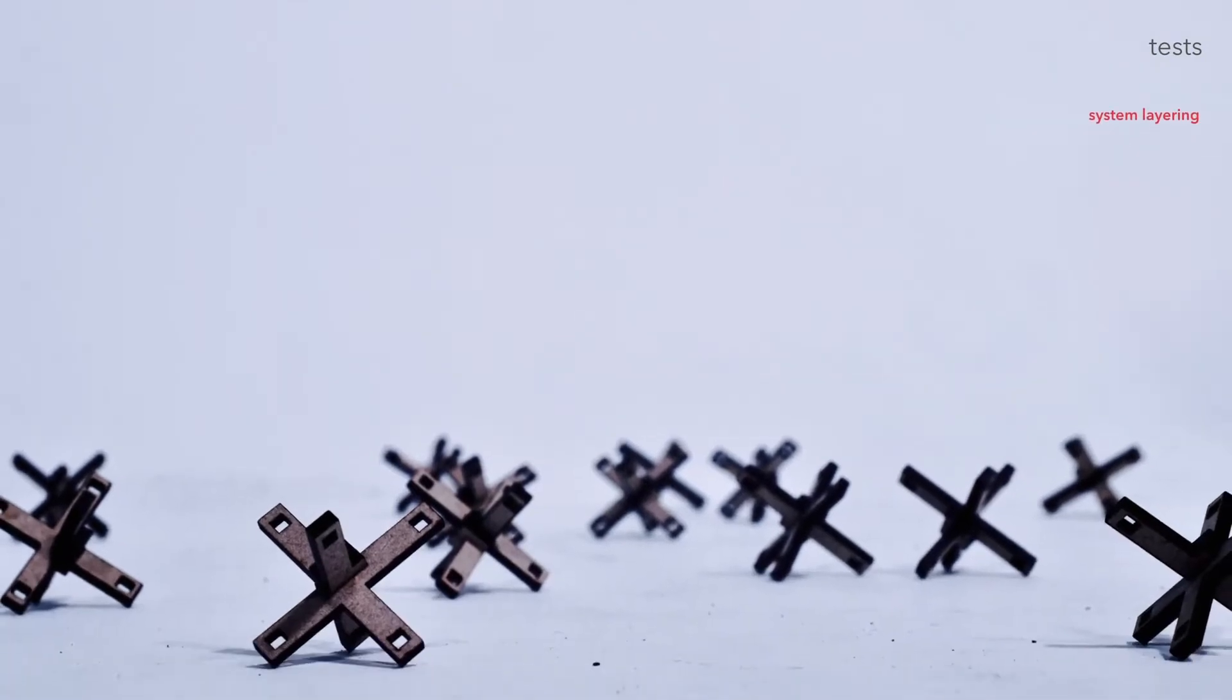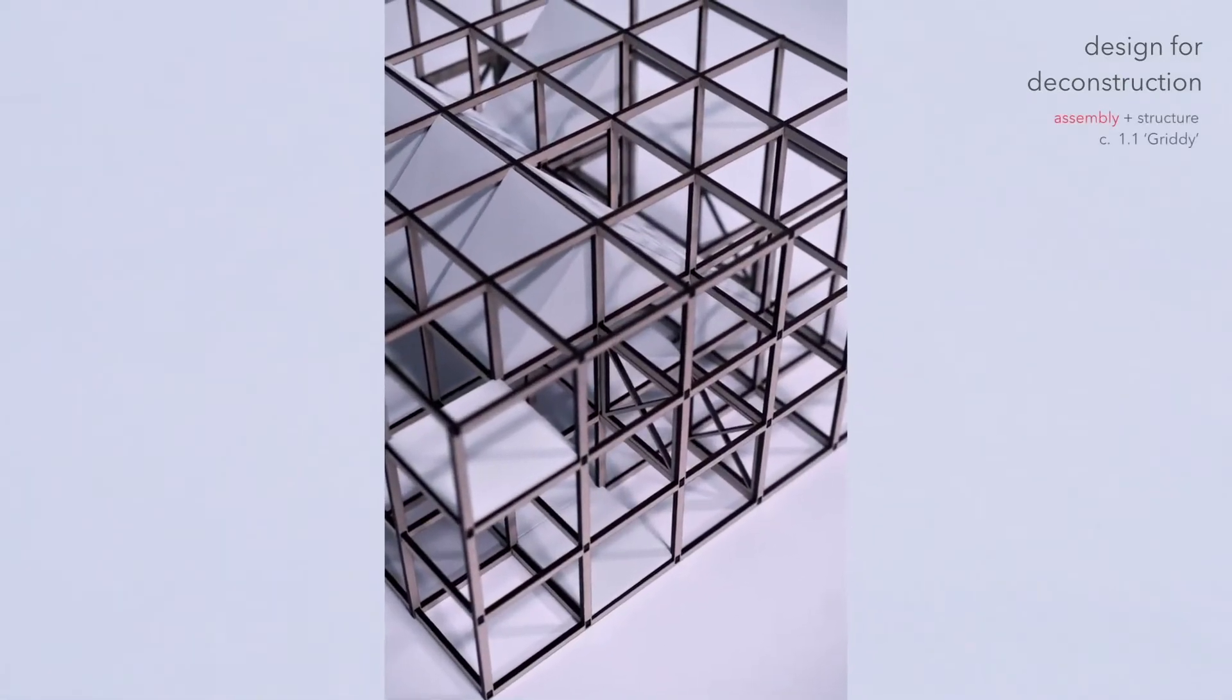The issues found with this cassette system in regards to deconstruction and reuse centre around the concept of layering, how different fundamental building systems are laminated together. This layering issue can be addressed architecturally through the separation of structural and non-structural elements.